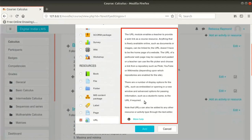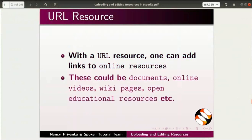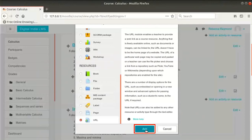Scroll down and select URL from the list. Detailed description about the resource is seen on the right side. With a URL resource, one can add links to online resources. These could be documents, online videos, wiki pages, open educational resources, etc. Click on the Add button at the bottom of the Activity Chooser.